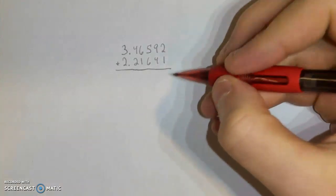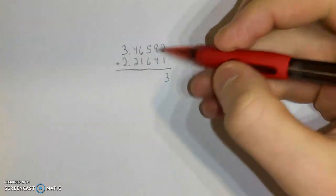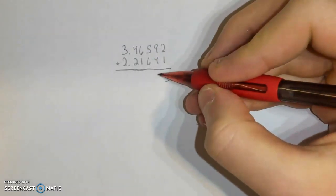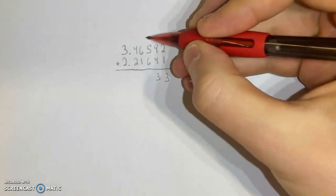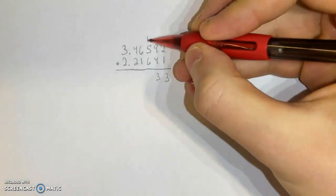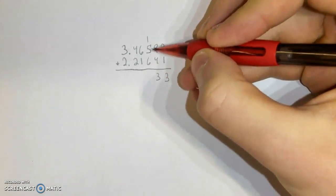So you got 2 plus 1 to start with. That's 3. 9 plus 4. That is 13, but what you want to do, you want to put 3 down here, carry the 1 up, and add it to this next row of adding.